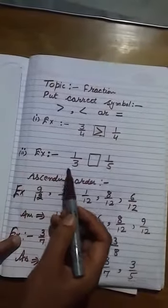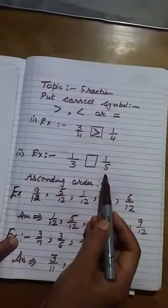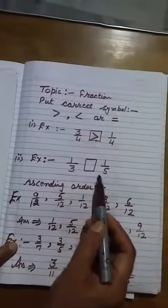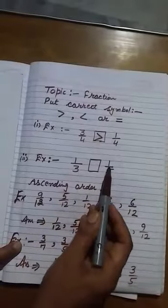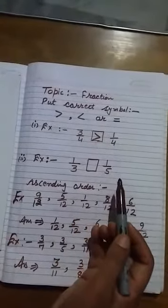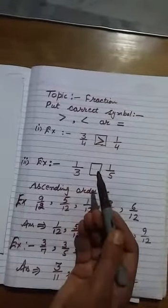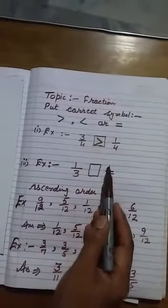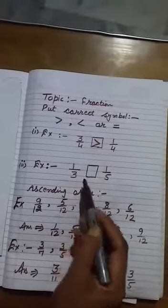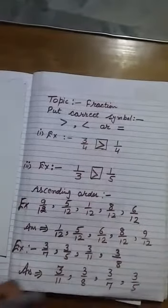In the second example, we have two numbers: 1 upon 3 and 1 upon 5. Now denominator is different, but numerator is equal. If numerator is equal, then result will be opposite. Now smaller digit represent the bigger part. Here 1 upon 3 and 1 upon 5. 1 upon 3 is greater than 1 upon 5.